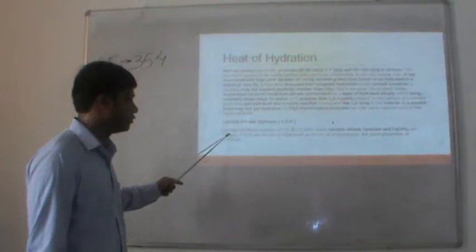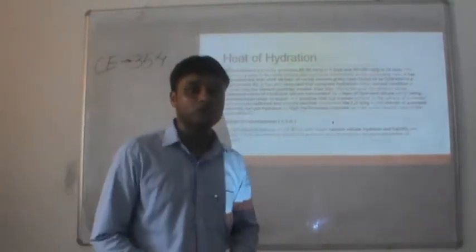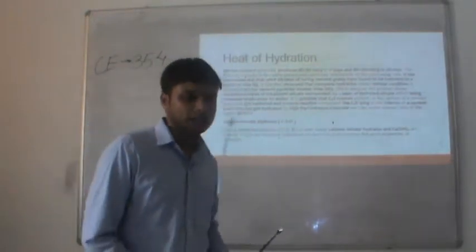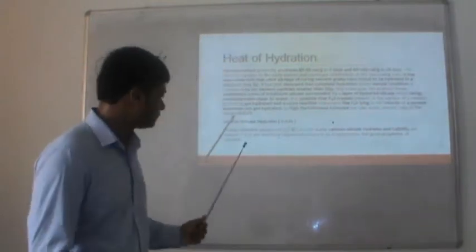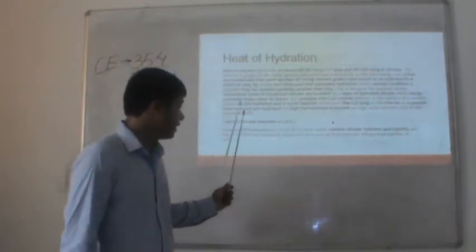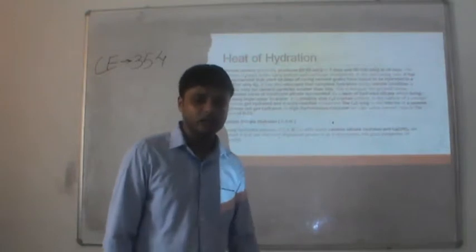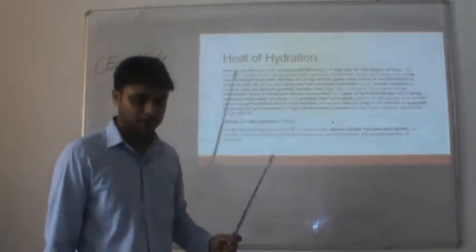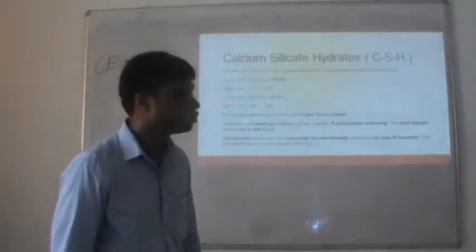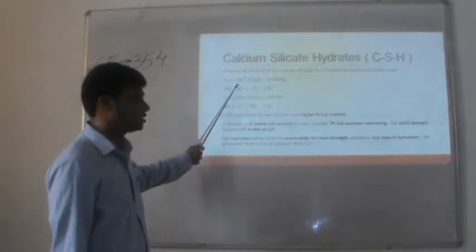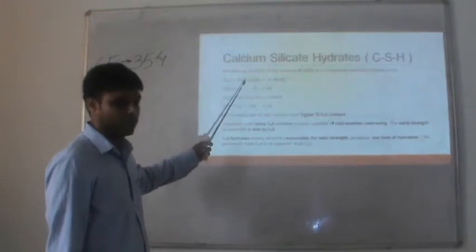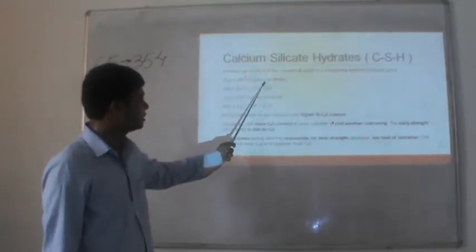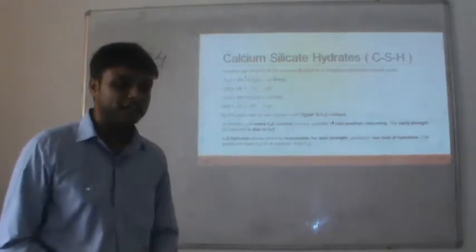The product of the heat of hydration reaction is calcium silicate hydrate (CSH), which has adhesive properties and is responsible for the adhesion of cement components. Apart from CSH, another compound — calcium hydroxide (Ca(OH)2) — is also formed. These two major compounds form after the hydration of cement. The reaction is: 2 C3S + 6 H2O → CSH + 3 Ca(OH)2.